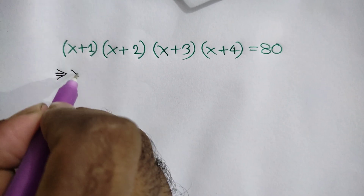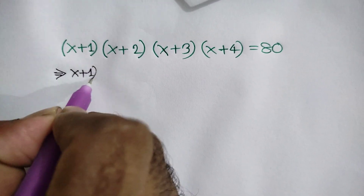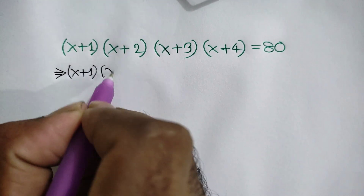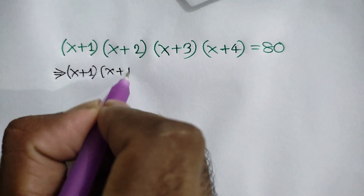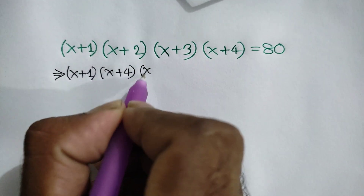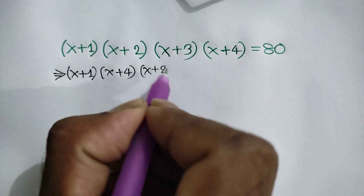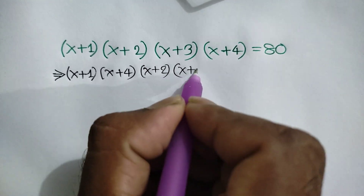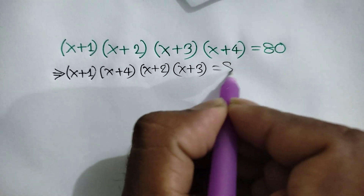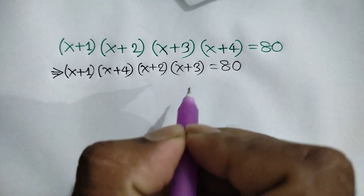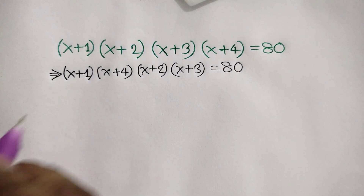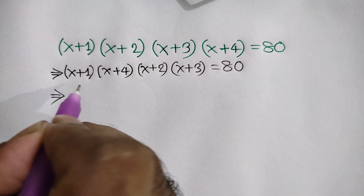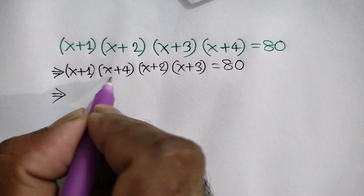Rearranging the left side, we can write (x+1)(x+4) times (x+2)(x+3) is equal to 80.